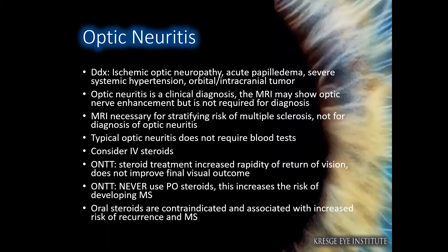The differential diagnosis for optic neuritis includes ischemic optic neuropathy, acute papilledema, severe systemic hypertension, or an orbital or intracranial tumor. Optic neuritis is a clinical diagnosis; however, MRIs are often necessary for stratifying the risk of multiple sclerosis.